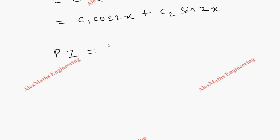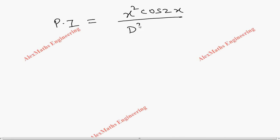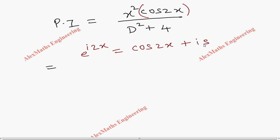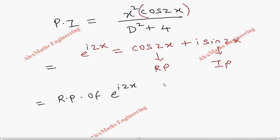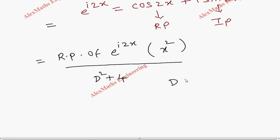Next, we find the particular integral. The right-hand side is x²·cos2x, so the PI is x²·cos2x divided by (D² + 4). We rewrite cos2x using Euler's formula: e^(i2x) = cos2x + i·sin2x, so cos2x is the real part of e^(i2x). We write the real part of [x²·e^(i2x) / (D² + 4)].